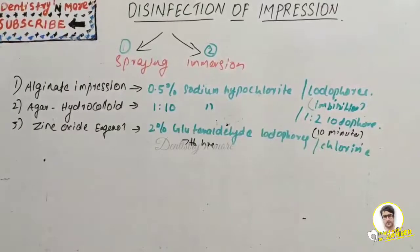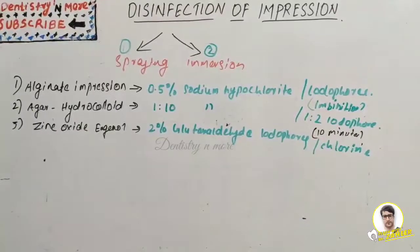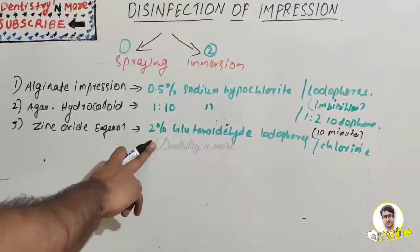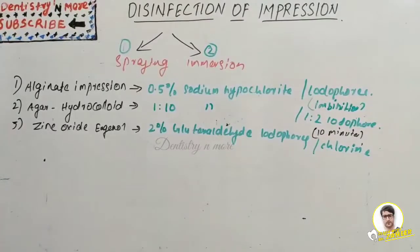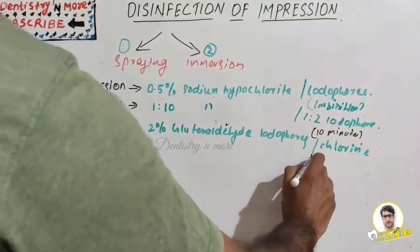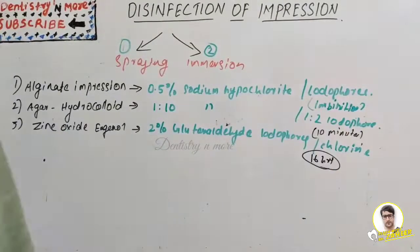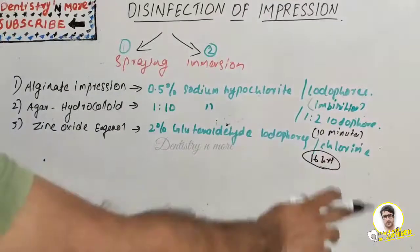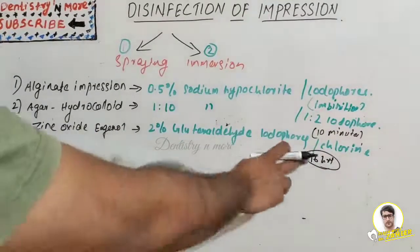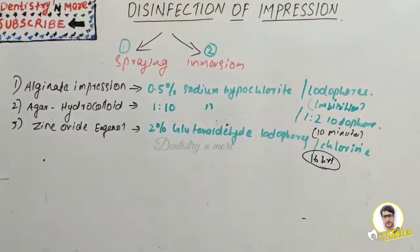For zinc oxide eugenol — our secondary impression material for complete dentures — we can use either 2% glutaraldehyde, iodophore, or chlorine compounds. In the case of sodium hypochlorite, if kept for around 16 hours there will be distortion, so 16 hours is the maximum. For agar hydrocolloid it is just 10 minutes — more than 10 minutes will cause distortion.